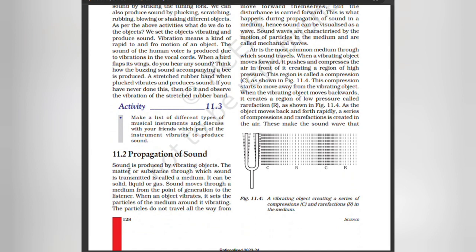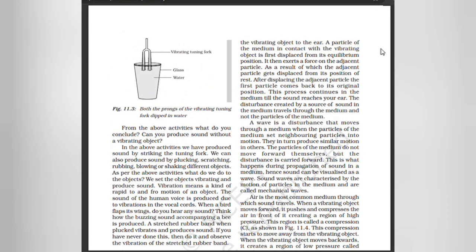Propagation of sound: Sound is produced by vibrating objects. The matter or substance through which sound is transmitted is called a medium. It can be solid, liquid, or gas. Sound moves through a medium from the point of generation to the listener. When an object vibrates, it sets the particles of the medium around it vibrating. The particles do not travel all the way from the vibrating object to the ear. A particle of the medium in contact with the vibrating object is first displaced from its equilibrium position. It then exerts a force on the adjacent particle, which gets displaced. After displacing the adjacent particle, the first particle comes back to its original position. This process continues in the medium till the sound reaches your ear. The disturbance travels through the medium, not the particles of the medium.